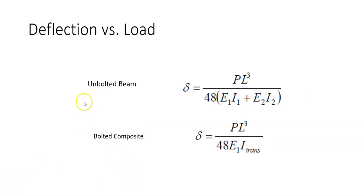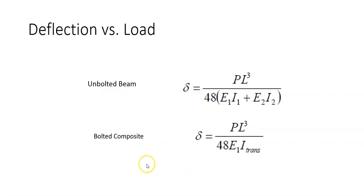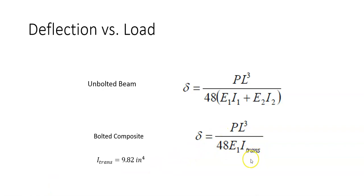In summary, for unbolted beams you calculate deflection from the simplified equation. For the bolted composite, you first calculate the transformed moment of inertia, then plug into the deflection equation to get the result. You would see that the deflection of the bolted composite is considerably less than the deflection of the unbolted beams. For the experiment we did in the lab, I calculated the transformed moment of inertia to be approximately 9.82 inches to the power of 4, which gives you the analytical deflection that you can compare with your experimental results. Thank you.